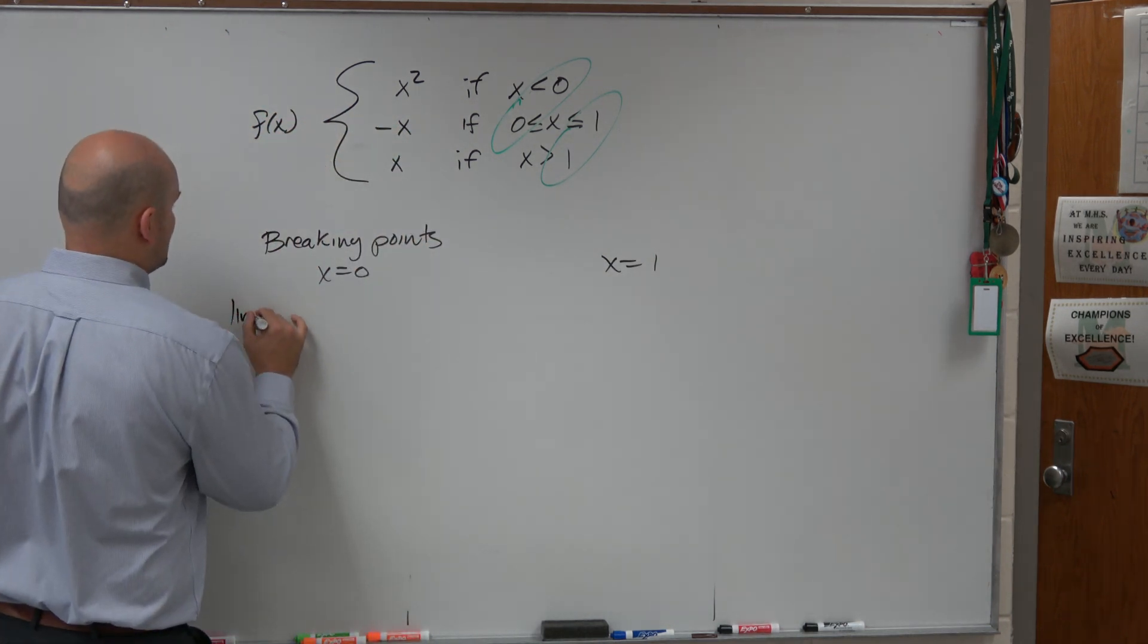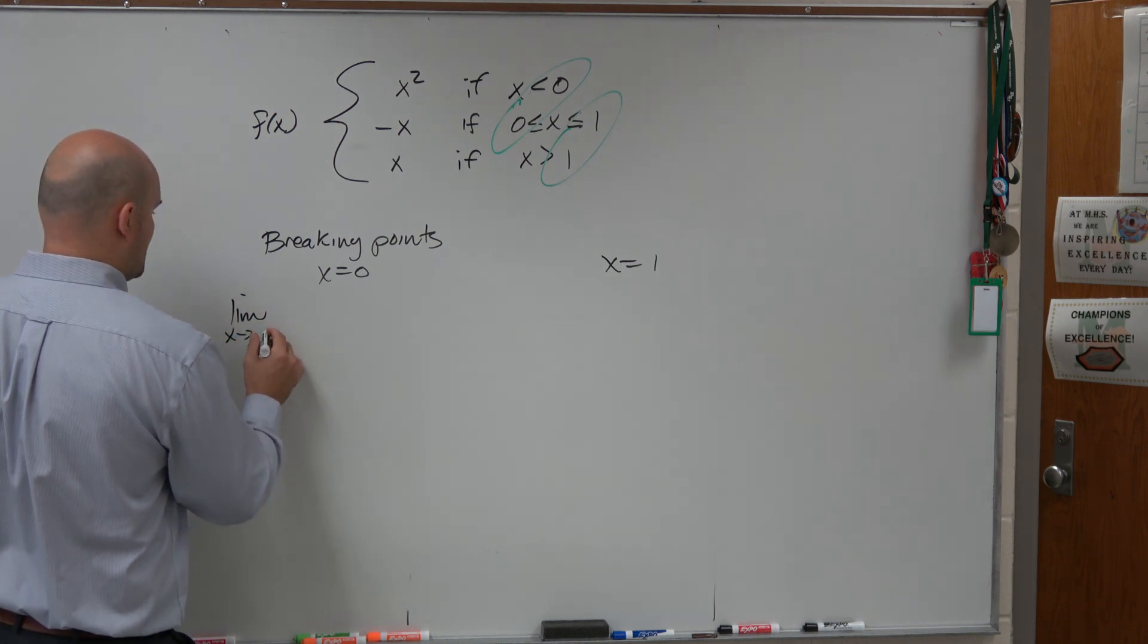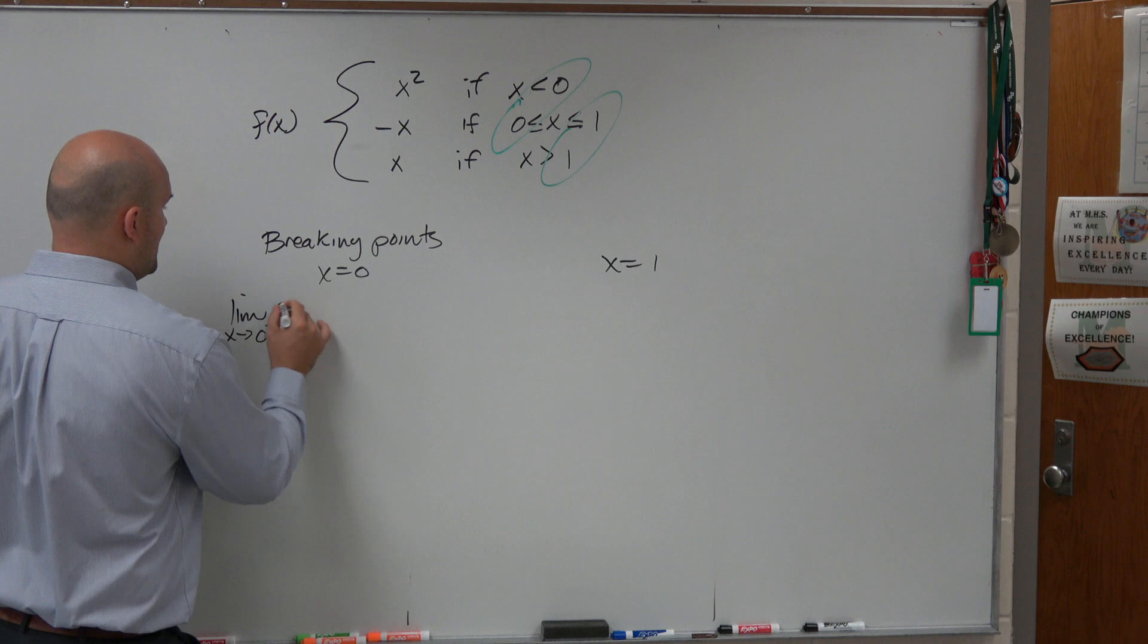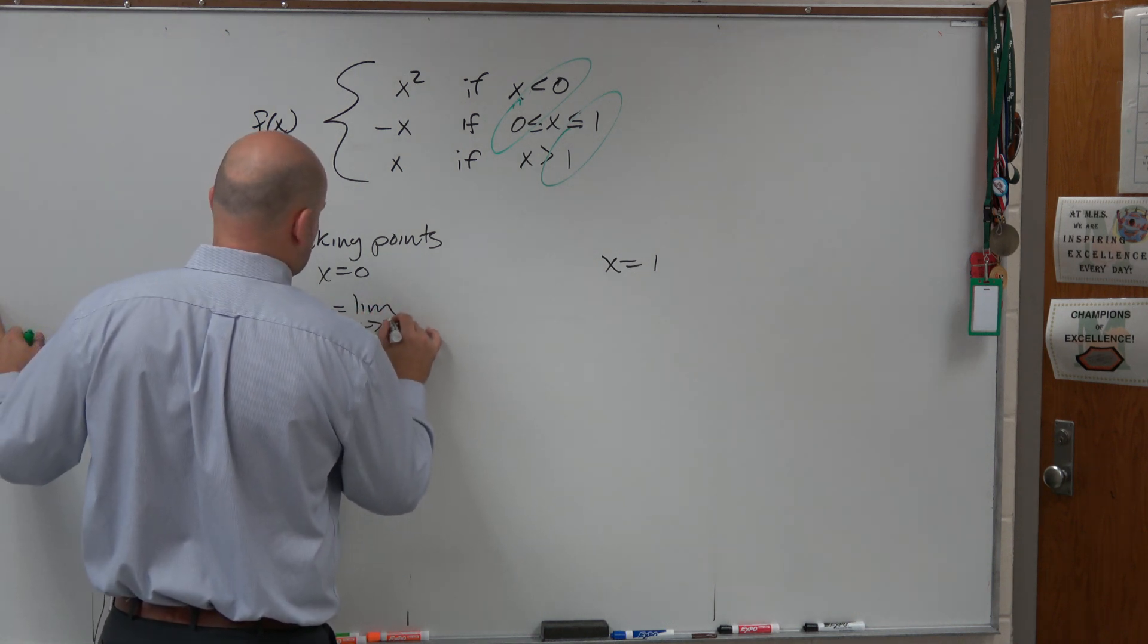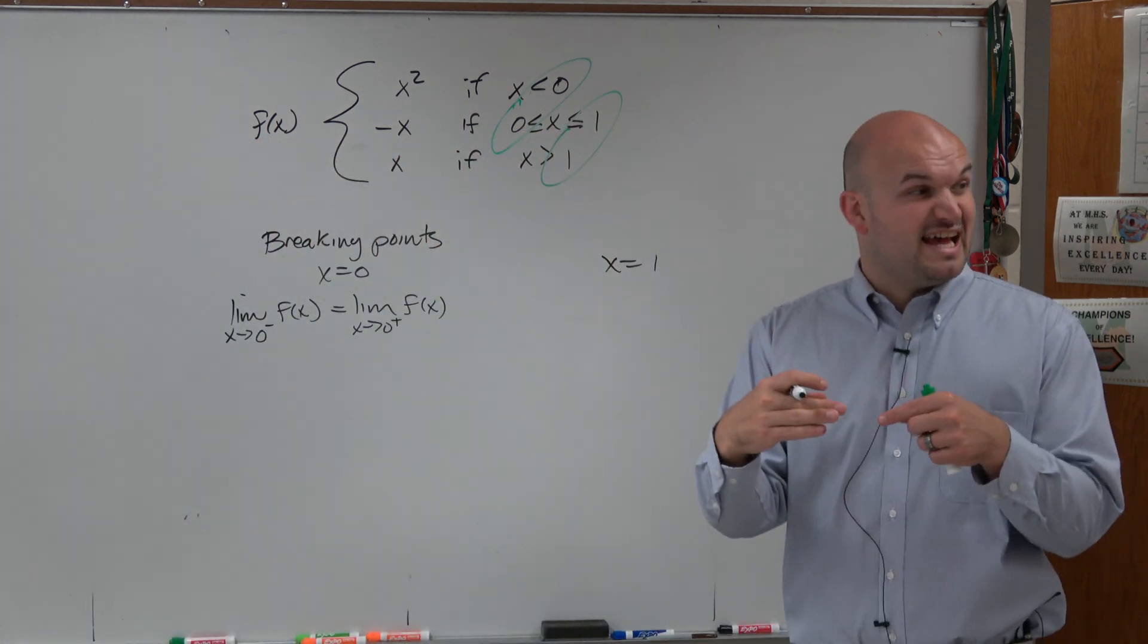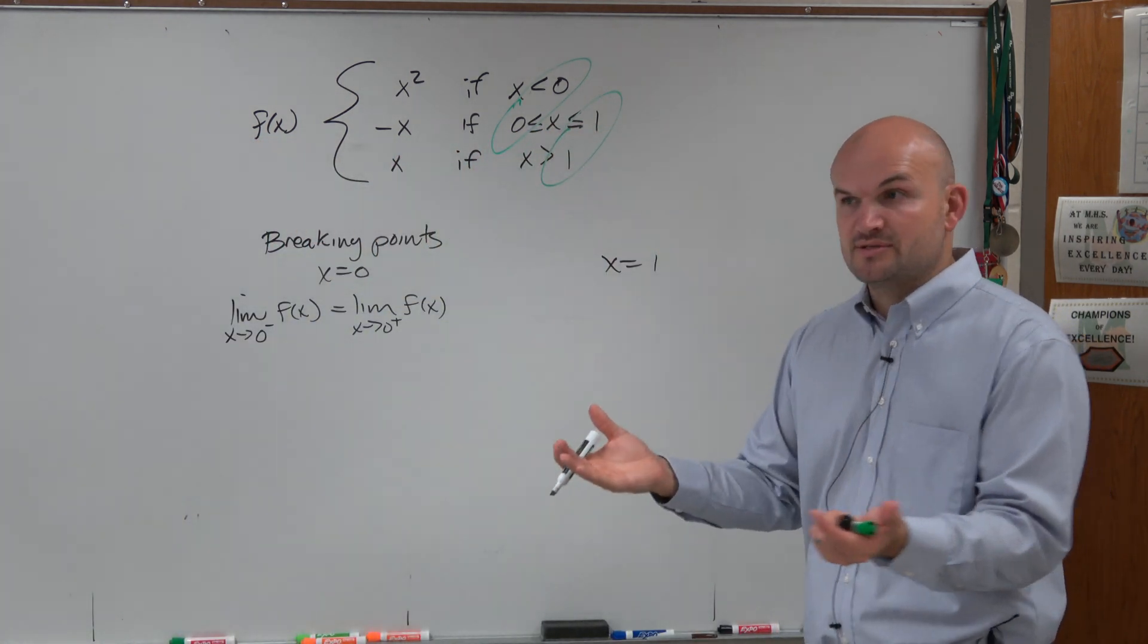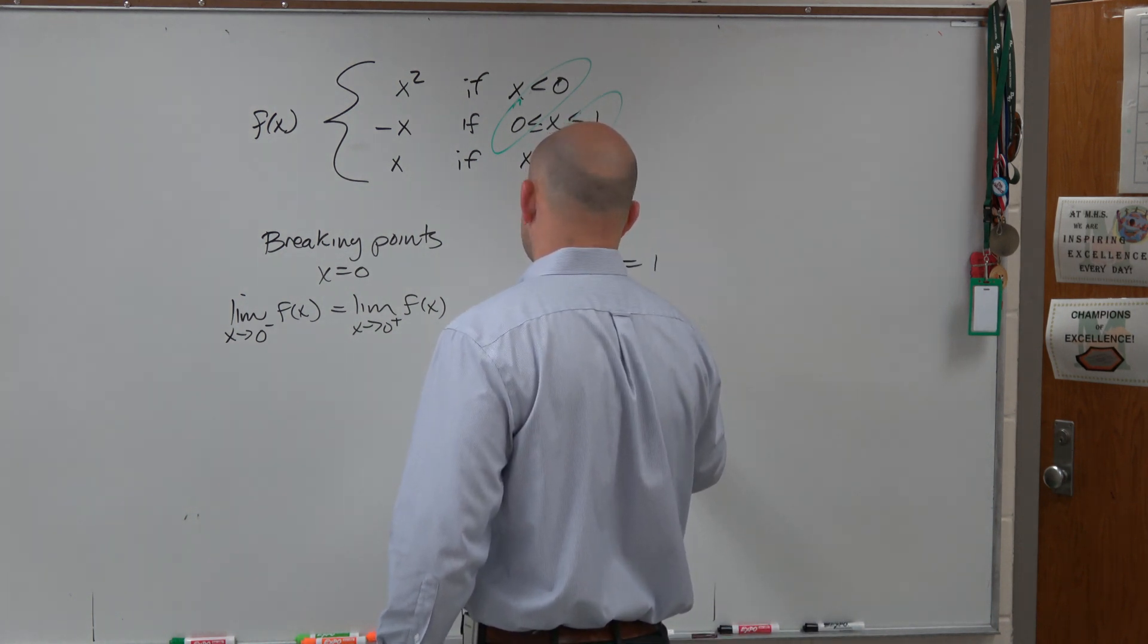So we want to make sure that the limit as x approaches 0 from the left of f of x has to be equal to the limit as x approaches 0 from the right of f of x. If the limits are the same, then we know that it's continuous at that point.